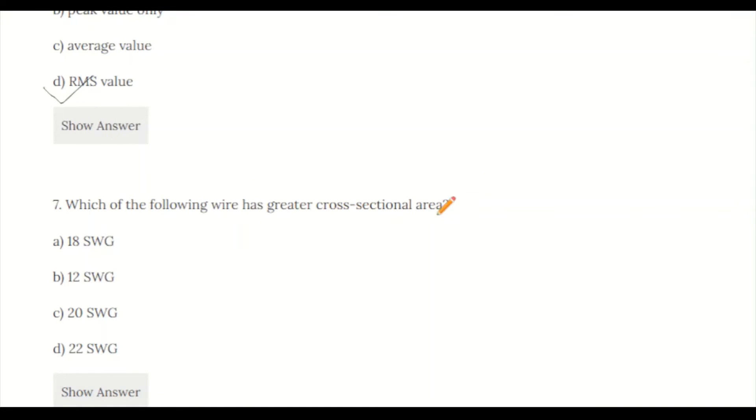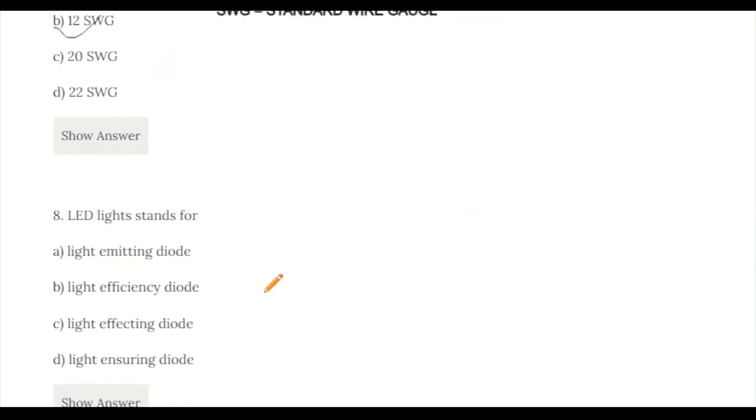Question 7: Which of the following wire has greater cross-sectional area? a) 18 SWG, b) 2 SWG, c) 20 SWG, d) 22 SWG. SWG stands for Standard Wire Gauge. 18 SWG has 0.048 inches diameter, while 2 SWG has 0.128 inches diameter. So 2 SWG has greater diameter and thus greater cross-sectional area. B is the correct answer.